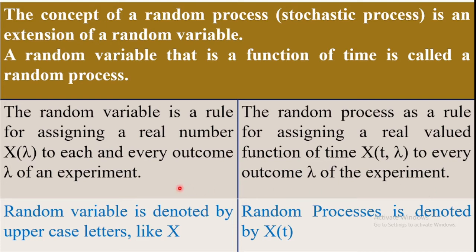A good example of a random variable: consider any random experiment, such as tossing a single coin. The outcomes of the experiment are head and tail. Those outcomes are assigned to real numbers — that is a random variable example. For a random process, a real-valued function of time is assigned to that outcome of the experiment.